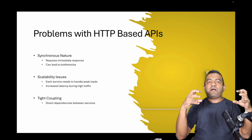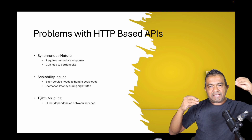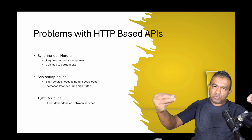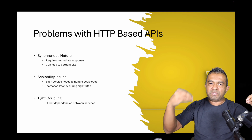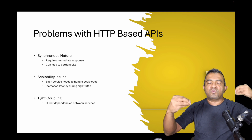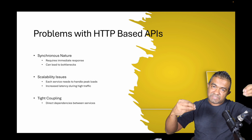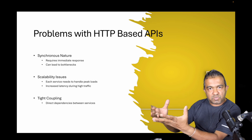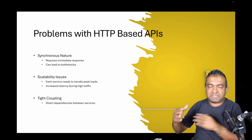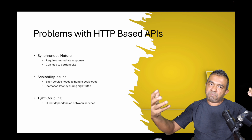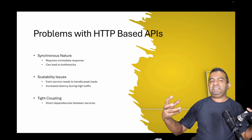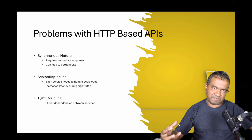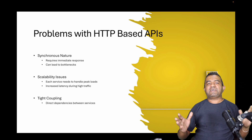The third problem is tight coupling. Service A has all the knowledge about service B. When service B's URL changes, when service B's contract changes — no matter what — service A has to know about it, because service A needs to know how to talk to service B, what payload to send, what parameters to pass. These create tight coupling between service A and B. Service B cannot independently change its payload architecture, because the moment it does, service A fails.